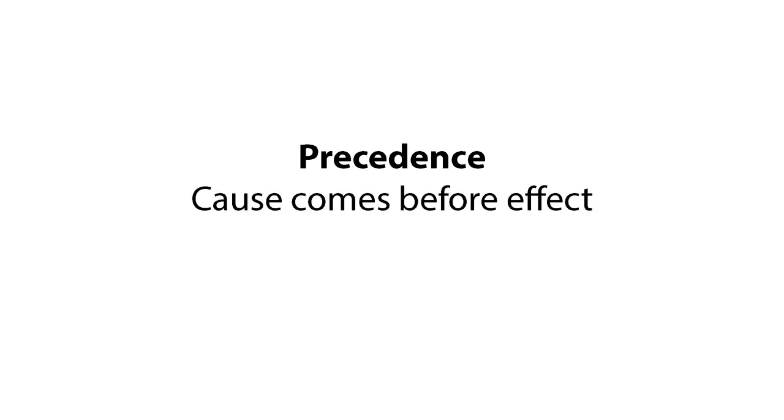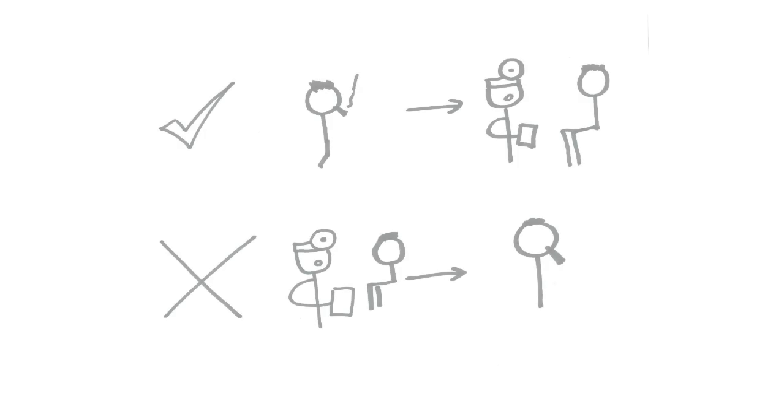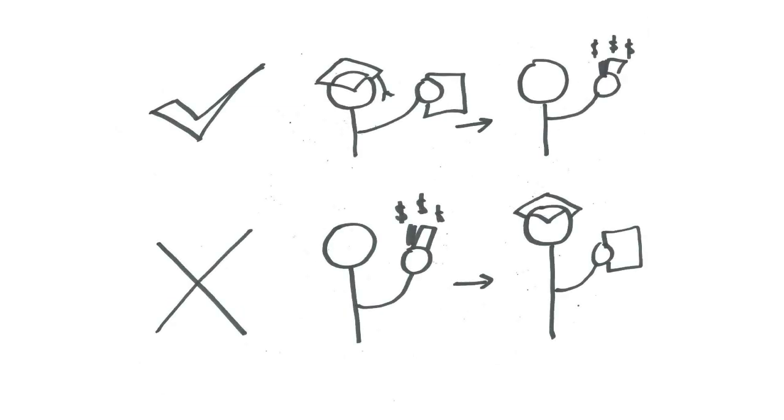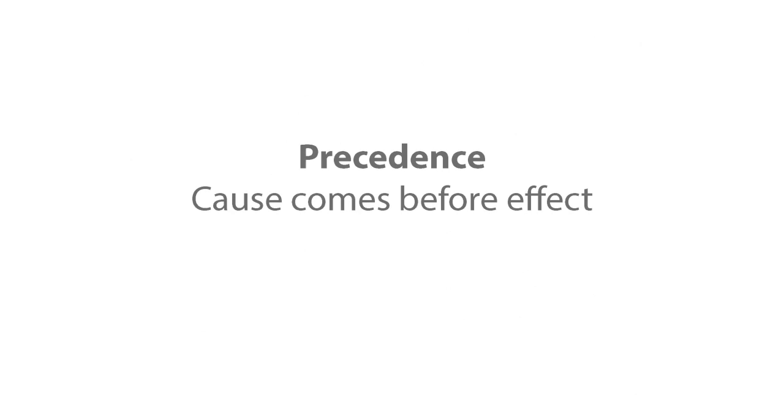Precedence means that the cause must come before the effect. If we see that smokers are more likely to get cancer, our cancer victims should have been smoking before they got cancer. If people start smoking after they get cancer, they say to heck with it, well then we can't say that smoking is the cause. If we see that children become rich after they accumulate education, then we can say that education causes wealth. However, if only rich kids end up going to school, then the causal relationship might run in the opposite direction. This is precedence. The cause must come before the observed effect.